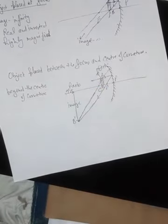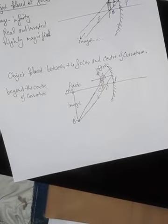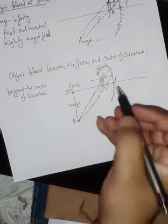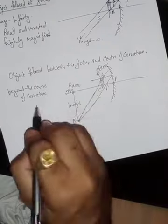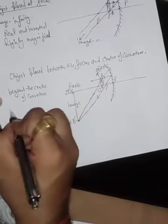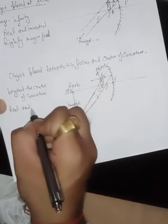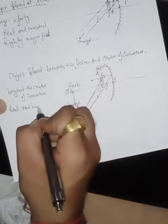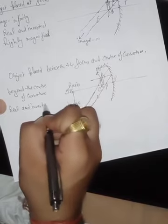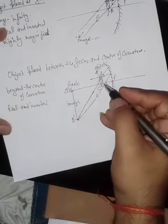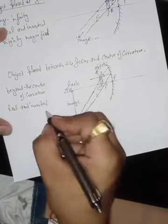The image is formed beyond the center of curvature. When the image forms in front of the mirror it is real and inverted. Third point: the image is larger than the object.